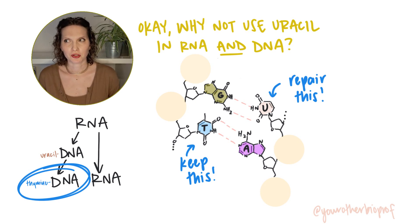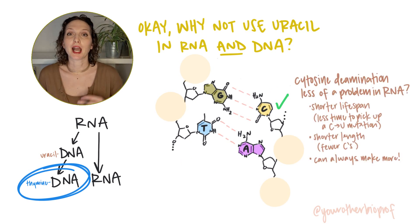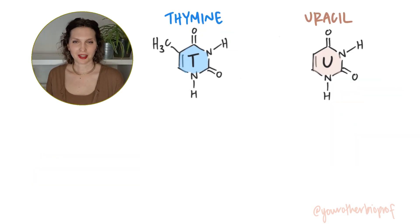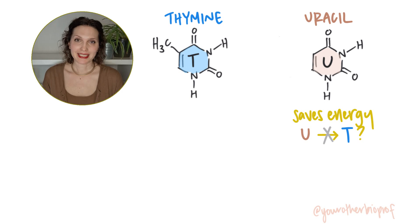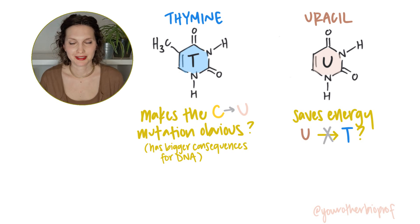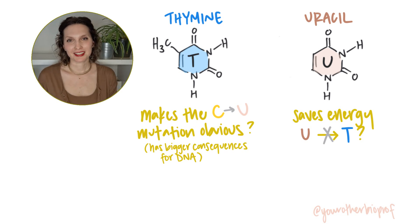DNA is permanent — it's our source material for genetic information, and we want to make sure that the sequence is stable. RNA, on the other hand, is a much more temporary molecule, and we make a lot of it. So maybe it just wasn't as worth it to make that extra energy-spending step to generate thymine for RNA. So it could be that the use of uracil in RNA is a bit of an energy-saving measure, while the use of thymine in DNA helps to prevent problems caused by one of the most common spontaneous mutations in DNA. And of course, there are even more hypotheses on these preferences. Drop me a like if you learned something about uracil and thymine, check out my website for tutoring resources, and subscribe for more biology from me.